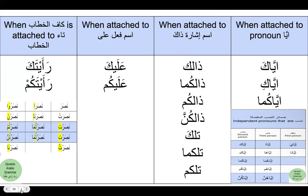The fourth case when you treat kaf al-khitab as a harf is when it attaches itself to ta' al-khitab. Ta' al-khitab is the ta' al-fa'il used in fi'l madi for second person: nasarta, nasartuma, nasartum, nasarti, nasartuma, nasartunna. When kaf al-khitab attaches itself to ta' al-khitab, you call that kaf al-khitab harf khitab la mahalla lahu min al-i'rab. These are the four cases where you will find kaf al-khitab as harf la mahalla lahu min al-i'rab.